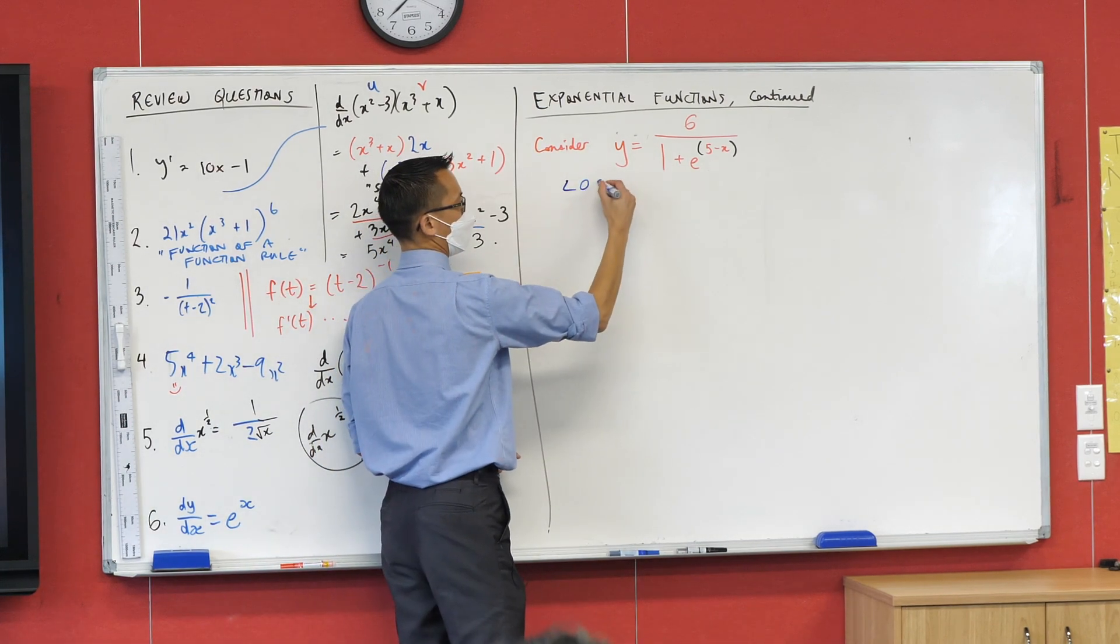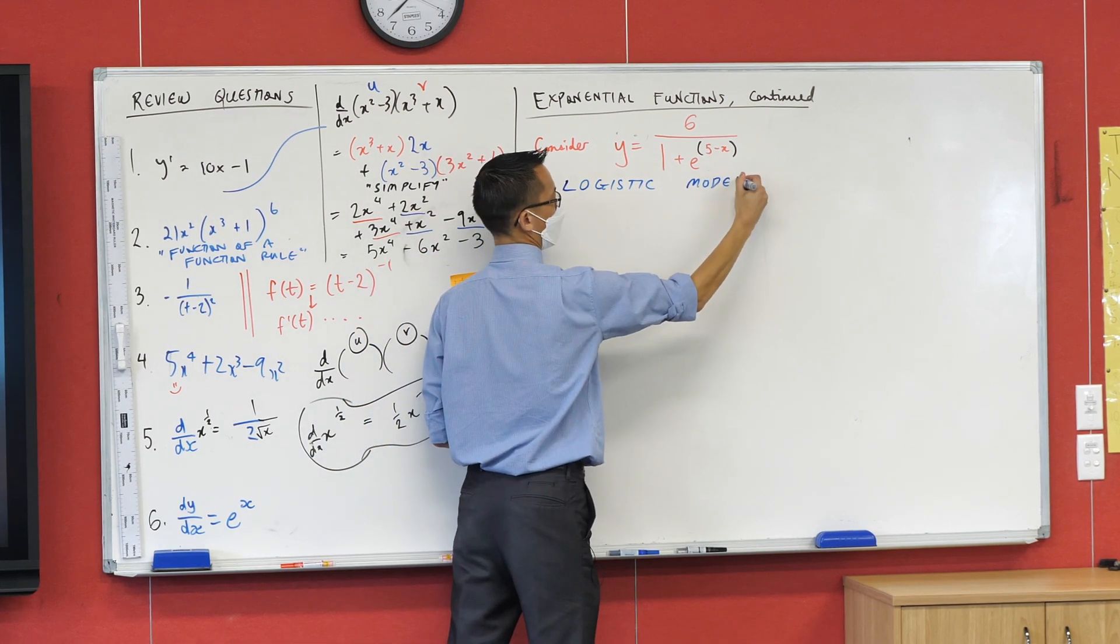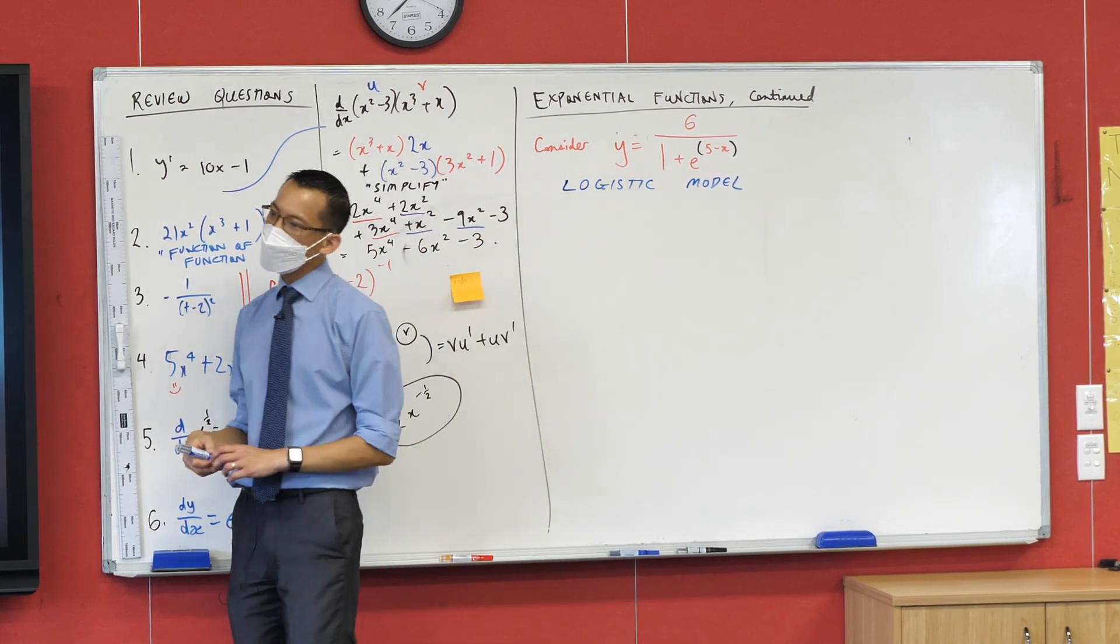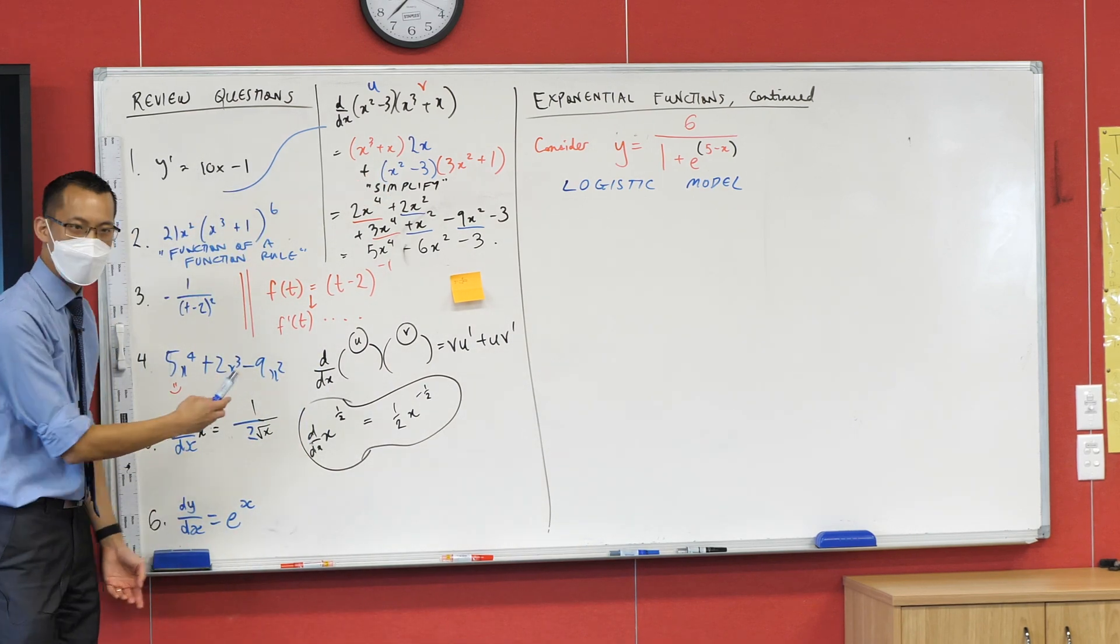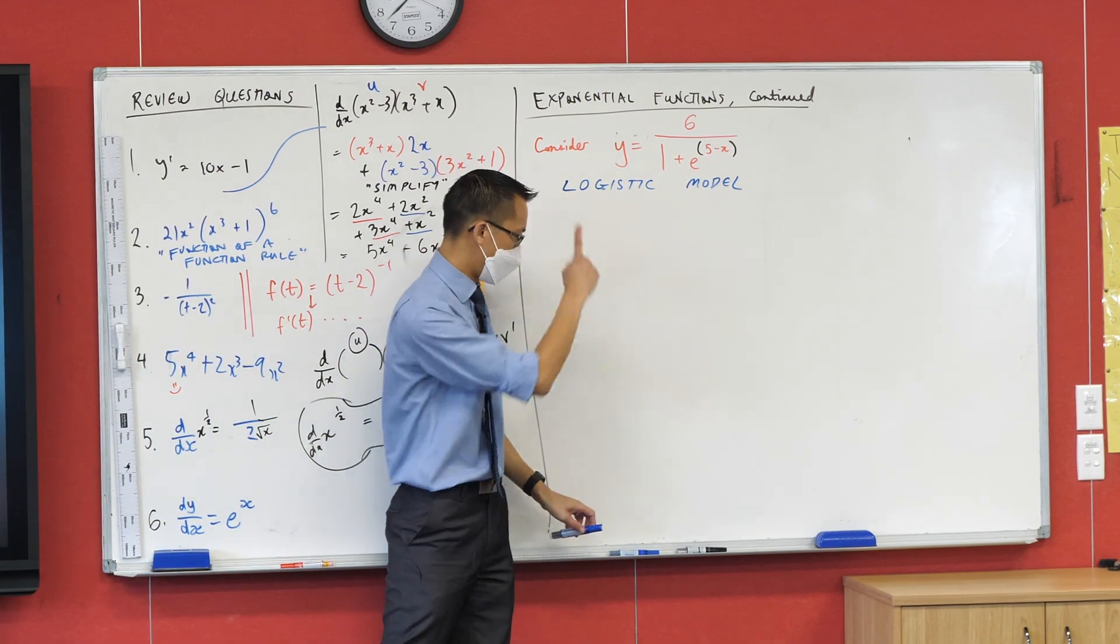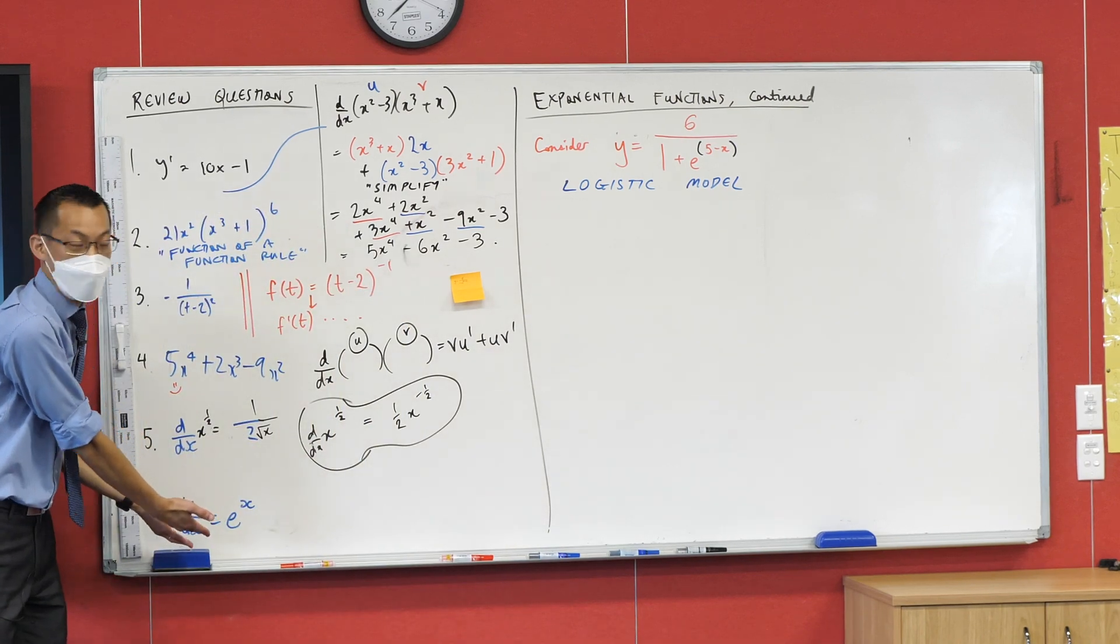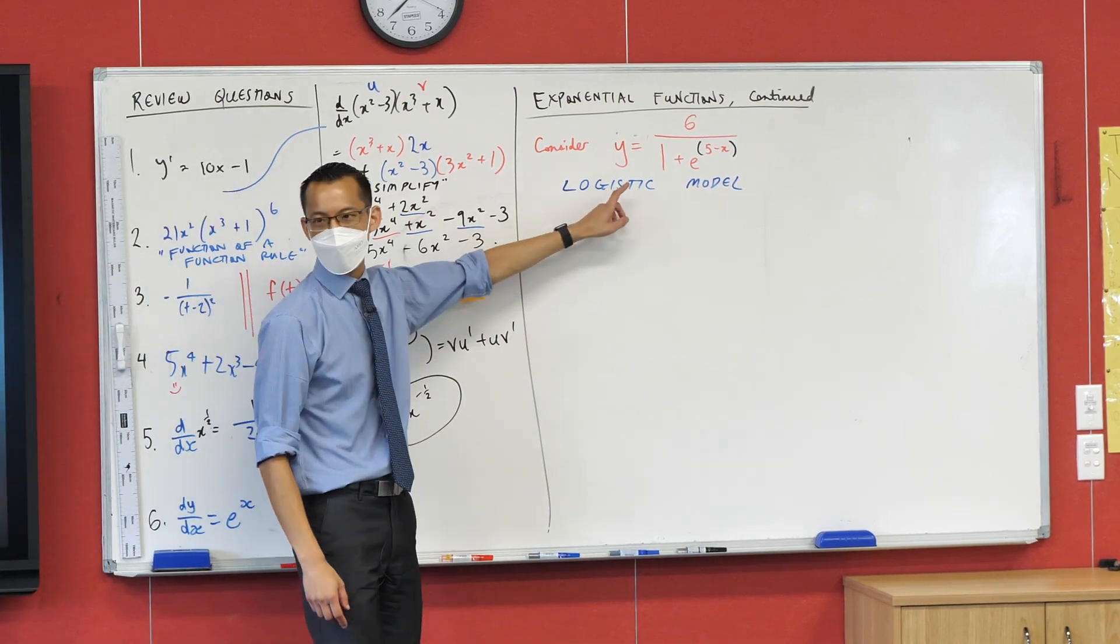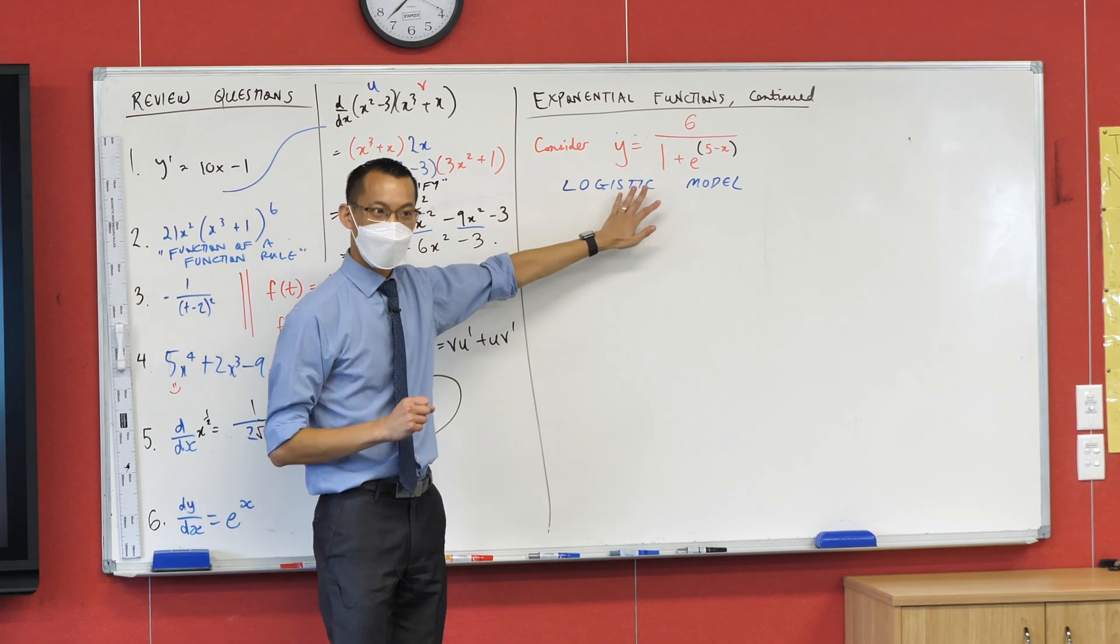It is called the logistic model. Now hopefully you can see that it shares something in common with things you know about. It's got this e to the x kind of thing in there, right? But if I handed this to you, even though this looks very easy to differentiate, where do I even start with this thing? It's a bit of a mess.